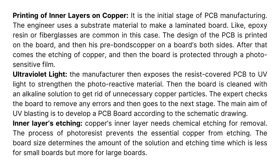Printing of inner layers on copper is the initial stage of PCB manufacturing. The engineer uses a substrate material to make a laminated board — epoxy resin or fiberglass are common in this case. The design of the PCB is printed on the board, and then copper is pre-bonded on both sides. After etching of copper, the board is protected through a photosensitive film. The manufacturer then exposes the resist-covered PCB to UV light to strengthen the photoreactive material. The board is then cleaned with an alkaline solution to remove unnecessary copper particles, and the expert checks the board to remove any errors.